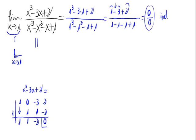So, this polynomial can be expressed as x minus 1 — the root — times the quotient left here, which is x squared plus x minus 2. That's the independent term.